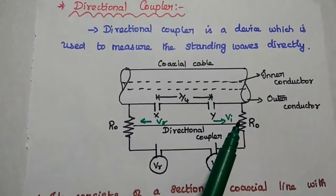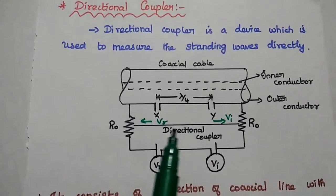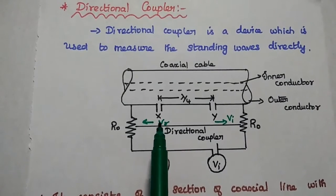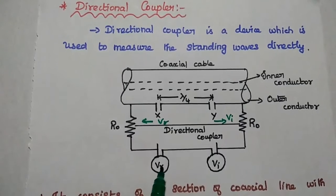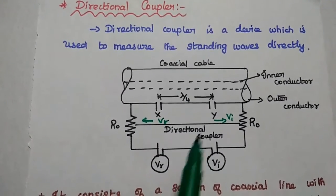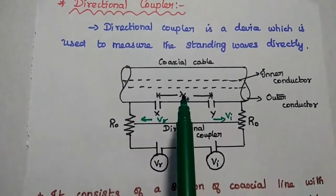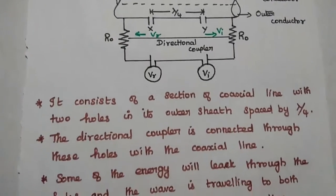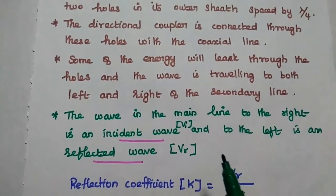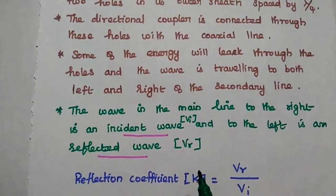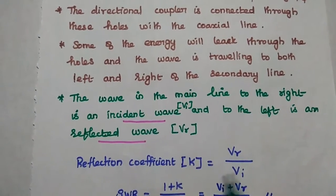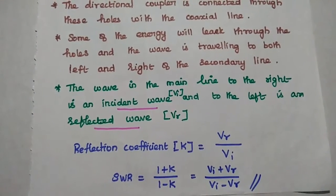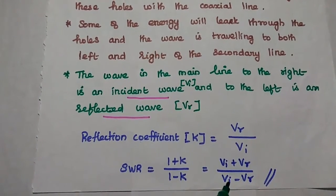The energy traveling towards the right-hand side is known as the incident wave, and the energy traveling through the left-hand side is known as the reflected wave. From this we can calculate the value of reflected voltage Vr and incident voltage Vi using a voltmeter. The device consists of a coaxial cable, directional coupler, and voltmeter. Using the formula K = Vr / Vi, we can get the reflection coefficient. From that, we can calculate the standing wave ratio as (1 + K) / (1 − K), which is also equal to (Vi + Vr) / (Vi − Vr).